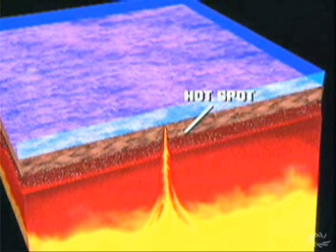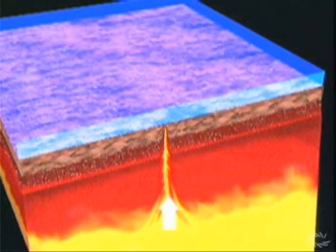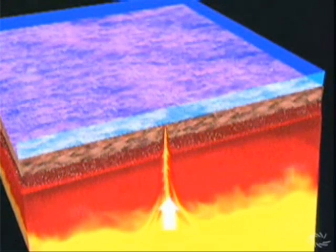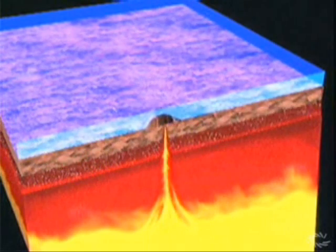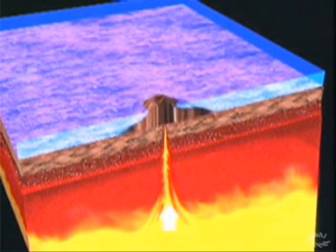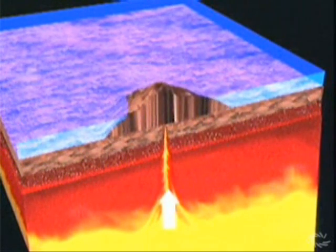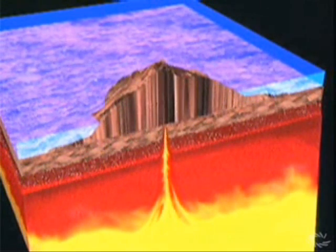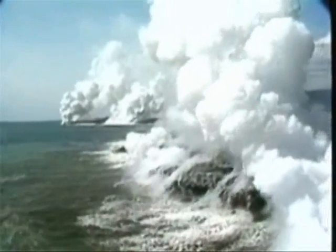Hot spots are areas where magma has found its way through the earth's crust, emerging on the ocean floor where it becomes hardened by the cold ocean water. More magma follows, adding to the formation of an underwater volcanic dome. The dome becomes larger with each eruption and may, after thousands of years, rise above sea level. Every island in the Hawaiian chain, as well as many others around the world, were formed in this way.